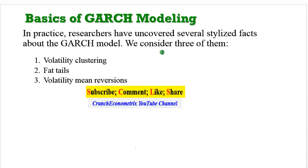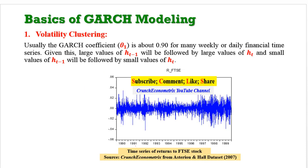In practice, researchers have uncovered several stylized facts about the GARCH model. Let's consider three of them: volatility clustering, fat tails, and volatility mean reversion. Let's consider the first one, volatility clustering.